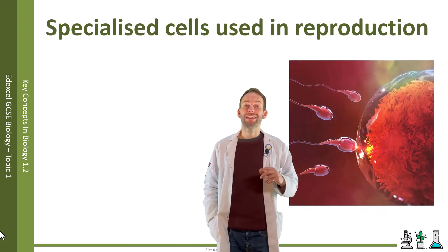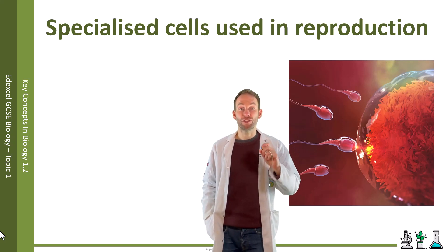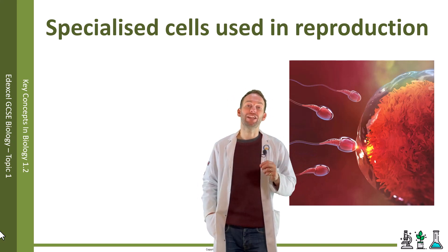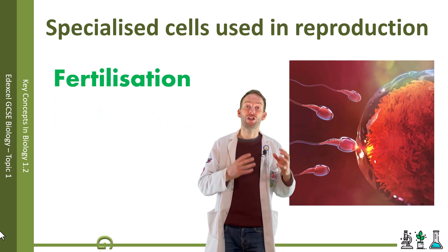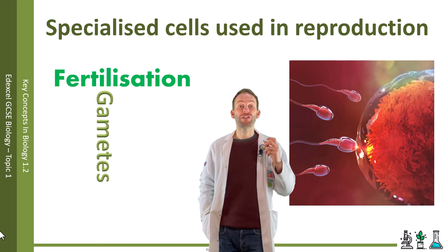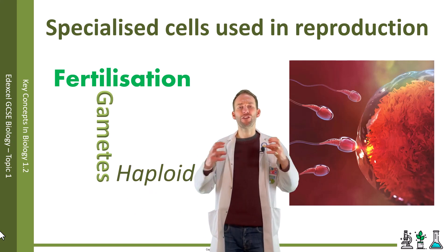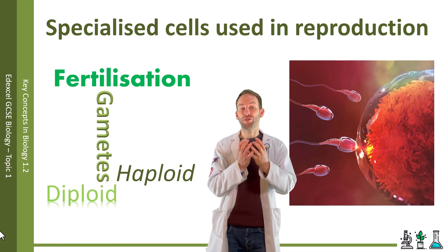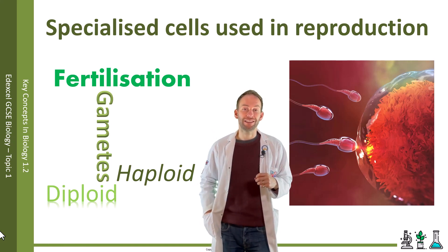We're going to look at two specialised cells used specifically in reproduction: sperm and egg. In order to make a new human, you need the sperm from the male and then you need it to fuse with the egg from a female. This is what we call fertilisation. Sperm and egg cells are known as gametes. Gametes have half the genetic information — they're known as haploid cells — so that when they fuse together, you go back to the full amount of genetic information, which we call a diploid cell.